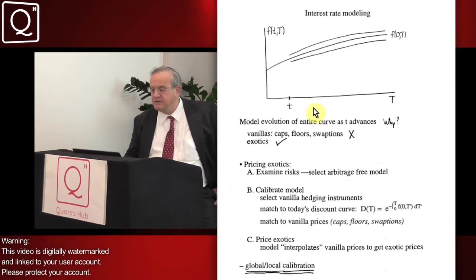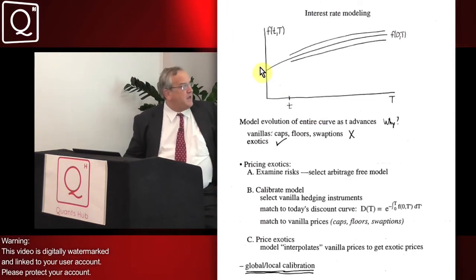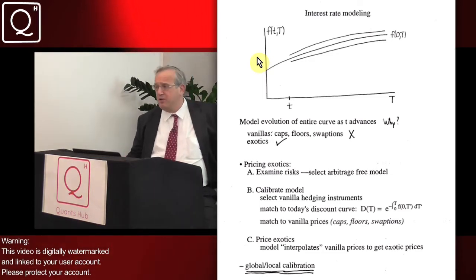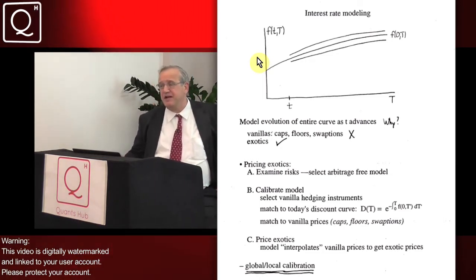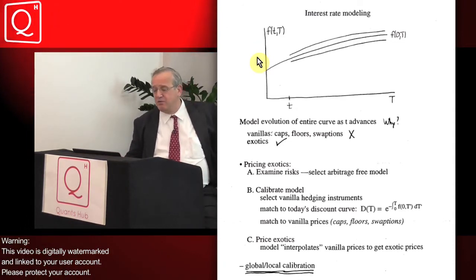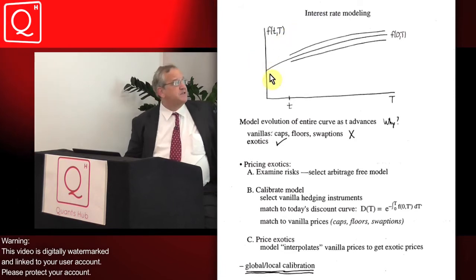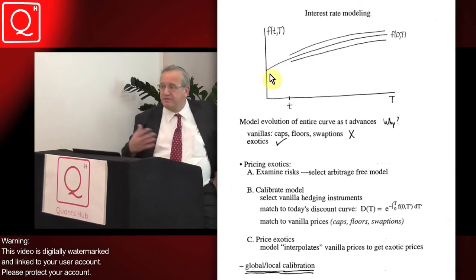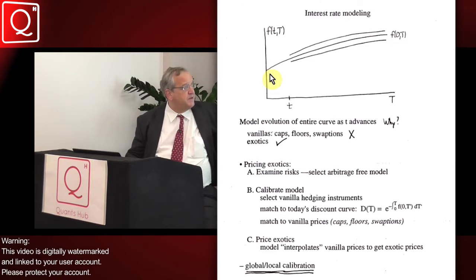Interest rate modeling - what makes it fun, much more fun than say equities, is that for interest rates you have to model the entire instantaneous forward rate curve as time advances from zero to T. This curve could do lots of different things: go up and down, parallel shift, tilt, flatten, flex - many different things that a curve can do as time advances.